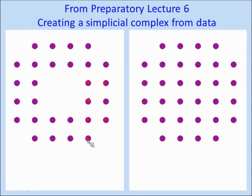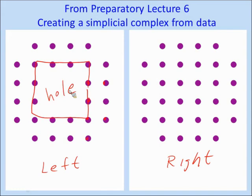The data on the left has a hole — we can see this hole clearly because we have two-dimensional data. But what do we do if we have high-dimensional data? What do we do if we want a computer to recognize the hole? One way to get a computer to recognize holes in higher-dimensional data is to basically create a simplicial complex. I do have a preparatory lecture six on creating simplicial complexes that you can listen to.